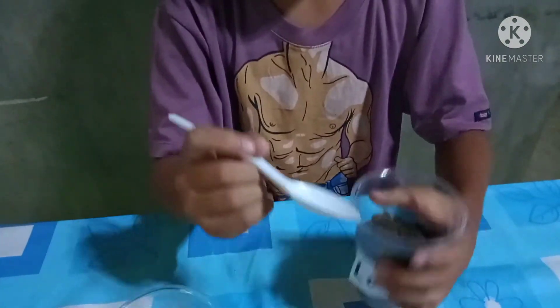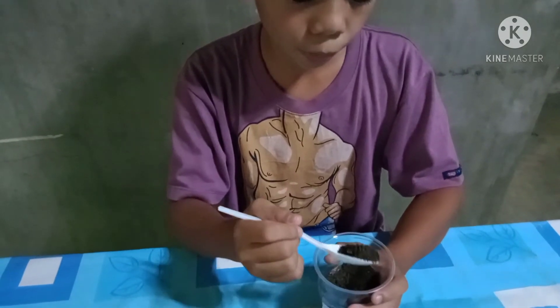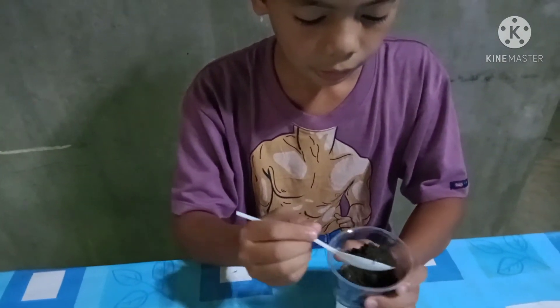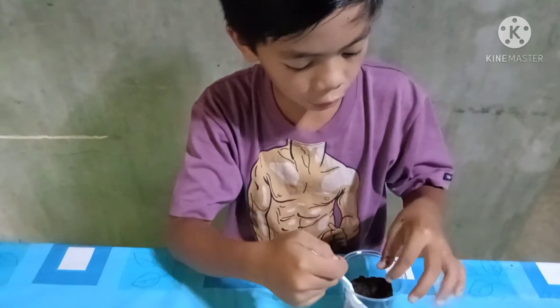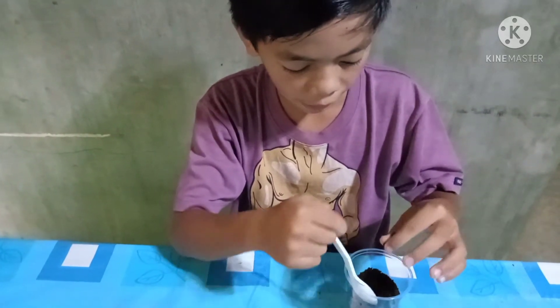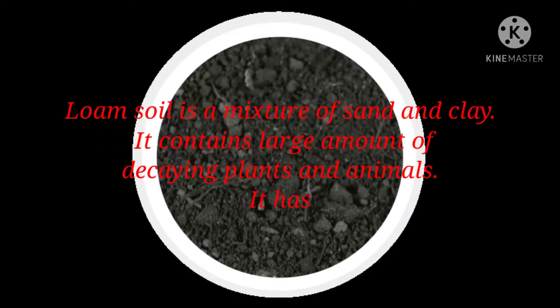Now this is loam soil. As you can see, it is quite thick and when held, its texture is somewhat loose. Loam soil is a mixture of sand and clay. It contains a large amount of decaying plants and animals and has a fine texture.